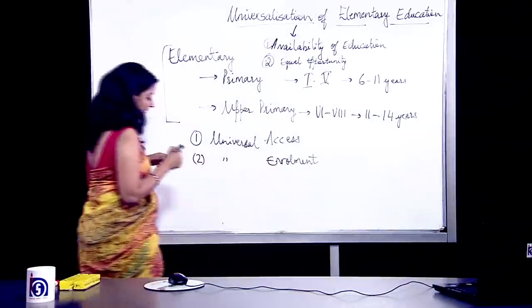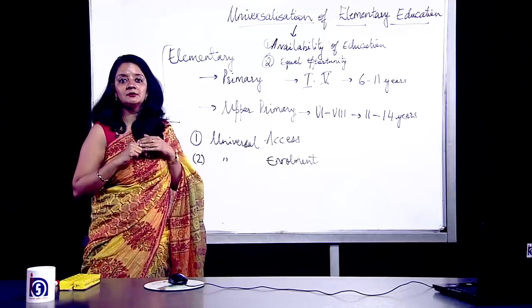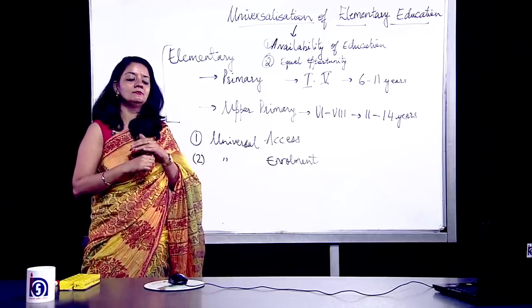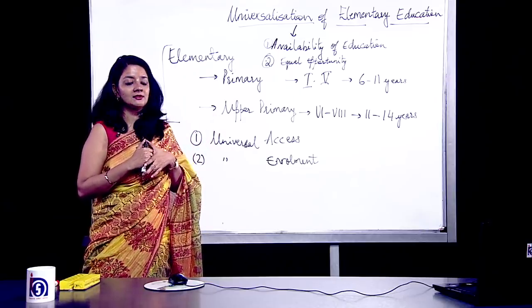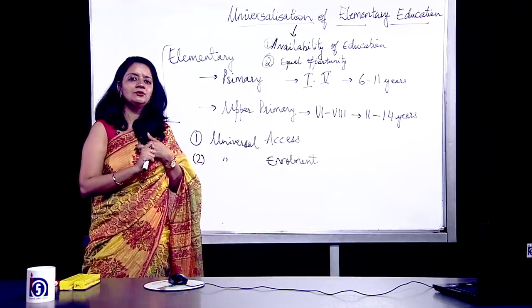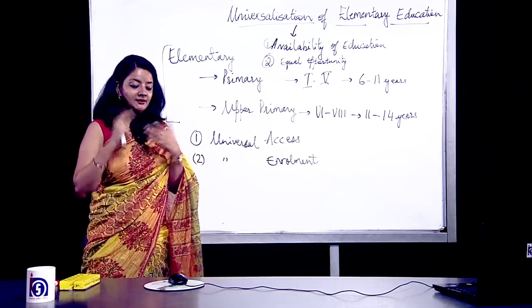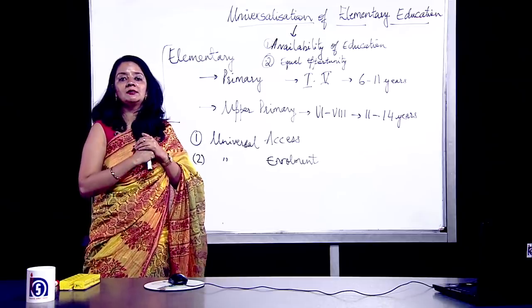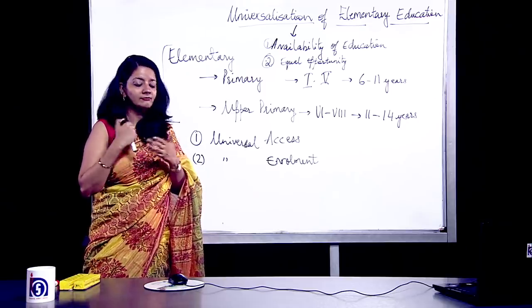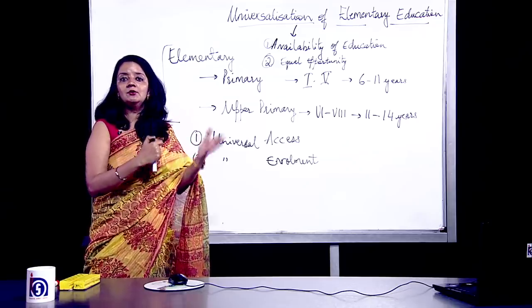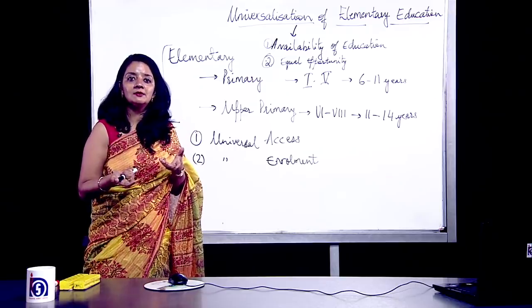The second one is universal enrollment. Under universal enrollment, we are saying that we cannot deny anyone admission. We cannot say that you are from a particular caste and ask you not to join our school. We cannot tell a child that you belong to a very poor background so we are not giving you admission. If he can afford the fees, nobody can deny him. And if education is free of cost, you certainly cannot deny a child on the basis of a poor background. That is universal enrollment.